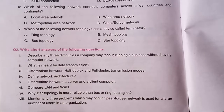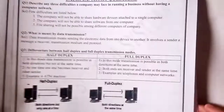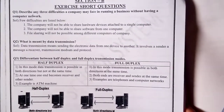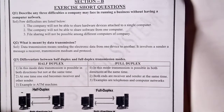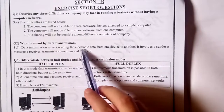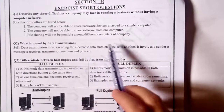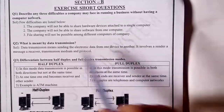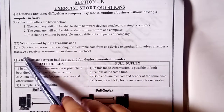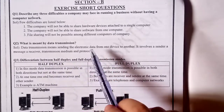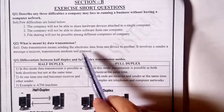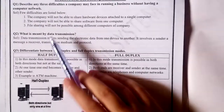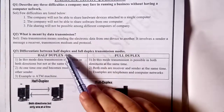Next question: What is meant by data transmission? You will easily get the answer in this book. Data transmission means sending the electronic data from one device to another. It involves a sender, a message, a receiver, a transmitter, a transmission medium, and a protocol.